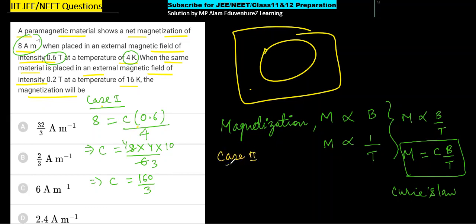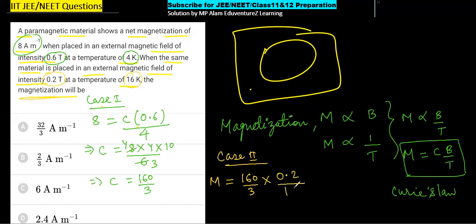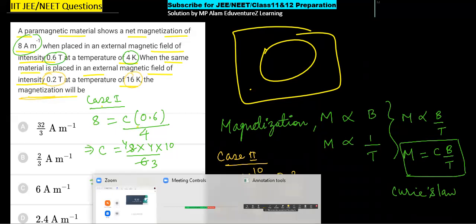Case 2 में magnetic field 0.2 tesla है और temperature 16 kelvin है। Magnetization = C × B / T = (160/3) × 0.2 / 16 = (160/3) × (0.2/16)। 0.2 into 10 करोगे तो 2/3 हो जाता है। So magnetization = 2/3 ampere per meter. I hope that this cleared you. Thank you.